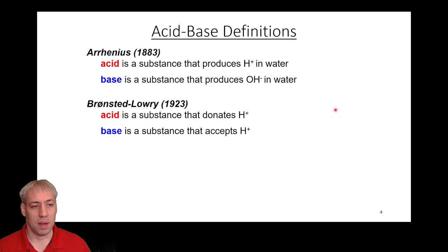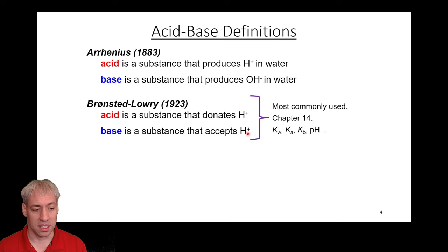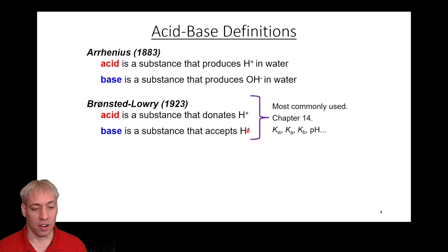There are a few different definitions of acid-base chemistry. The first was by Arrhenius in 1883, who proposed that acids generate H-plus in water and bases generate OH-minus in water. This definition was limited — acids and bases can only exist in water and are defined by whether they make H-plus and OH-minus. In chapter 14 we learned about Bronsted-Lowry acid-base chemistry, where an acid donates H-plus and a base accepts H-plus. Note this definition is independent of water, which makes it much broader — acids can exist in any solvent or even the gas phase.